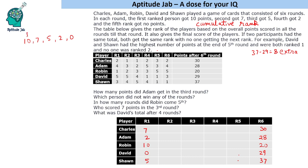An 8-point difference is only available from 10 and 2 — because 7 minus 0 is 7, and 5 minus 0 is 5 — so 10 and 2 gives a difference of 8. That means one person got 10 points and the other got 2 points. So both were at 27 points at the end of the fifth round.